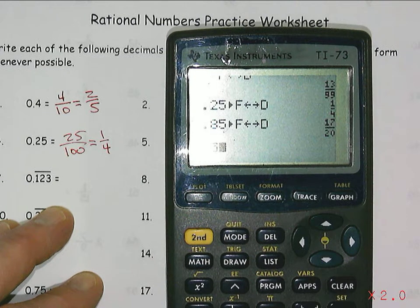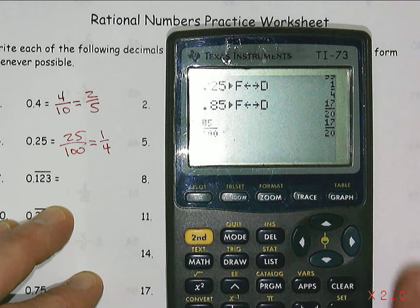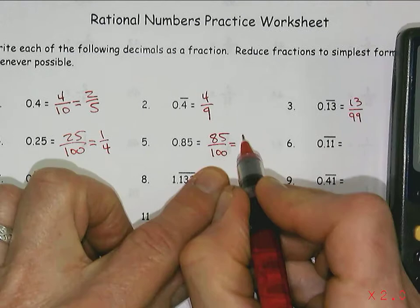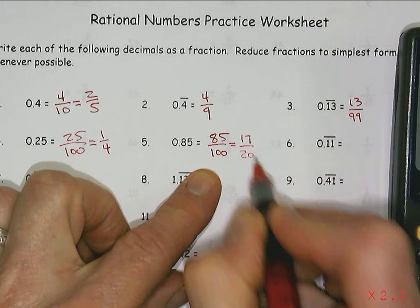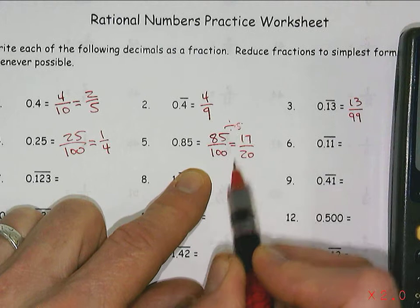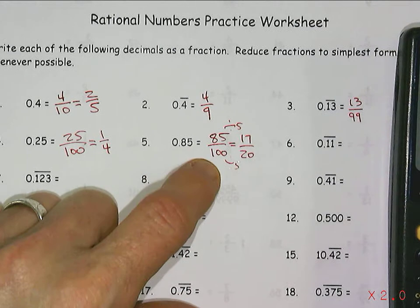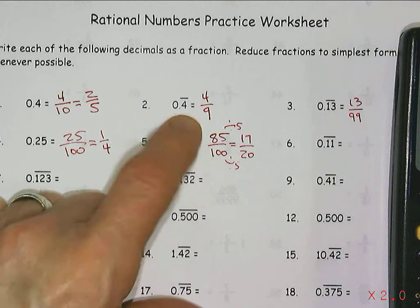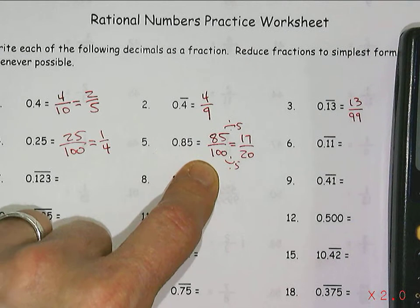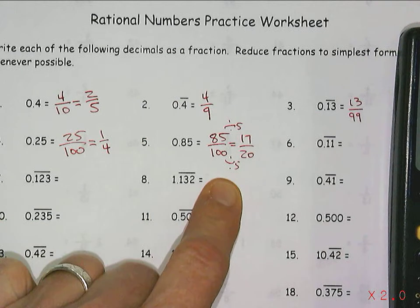And I could have actually done it this way, 85 one-hundredths, just hit enter, and it would give me 17 twentieths is reduced. And that's because both of these can be divided by five. You divide them both by five, that's sort of the way you would manually do that. Just look for the greatest common factor, which is 5. And so 85 divided by 5 is 17, 100 divided by 5 is 20.